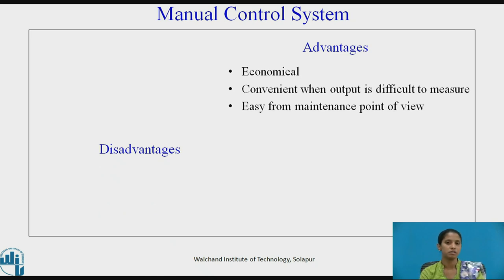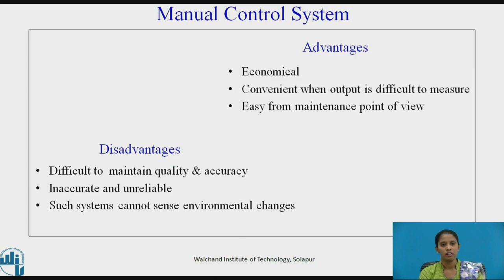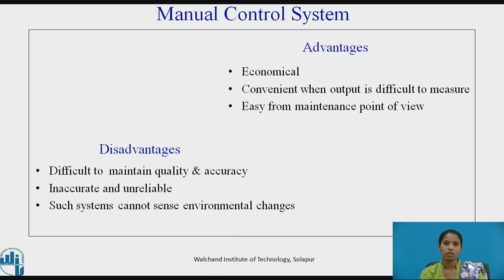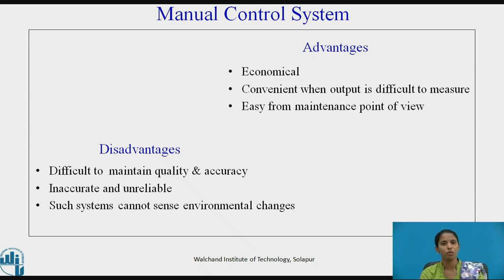Let us see the disadvantages. It is difficult to maintain quality and accuracy as human error may occur, so it cannot give accurate results and quality is not maintained uniformly. They are inaccurate and unreliable, and such systems cannot sense environmental changes.